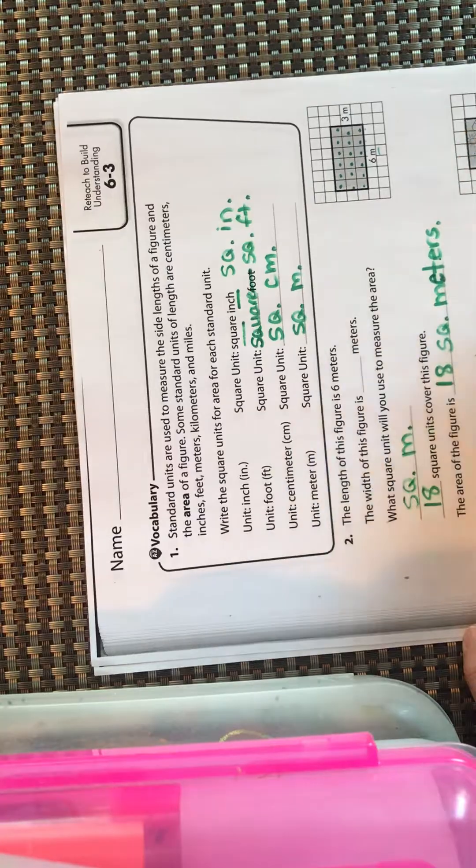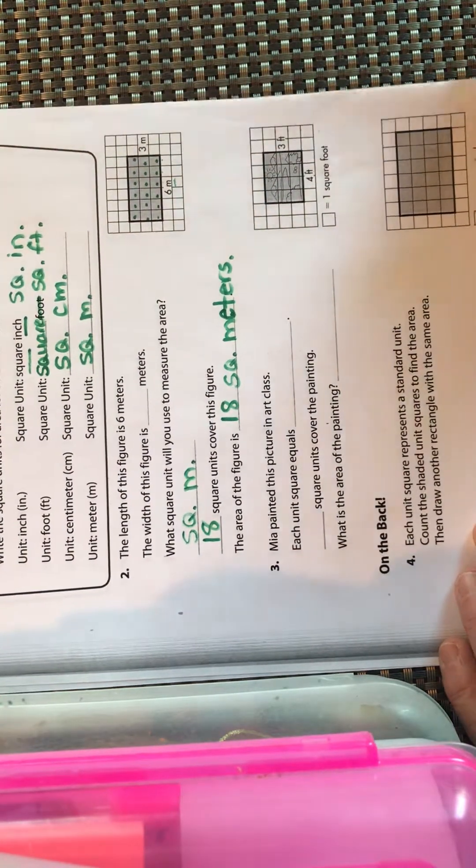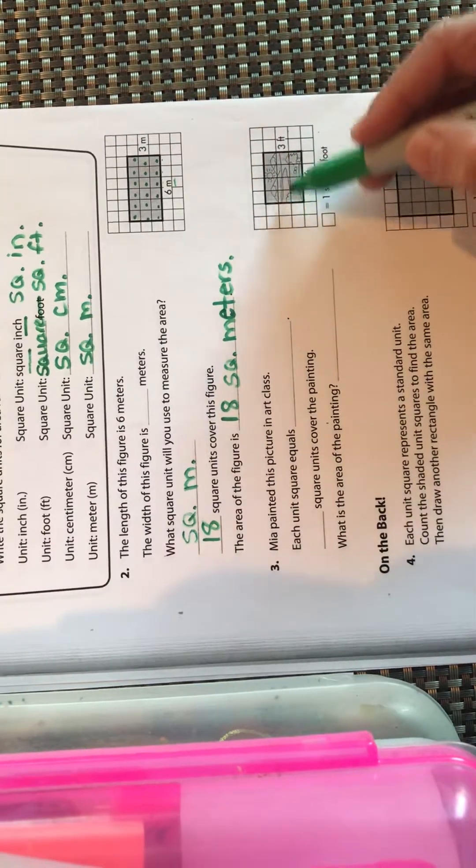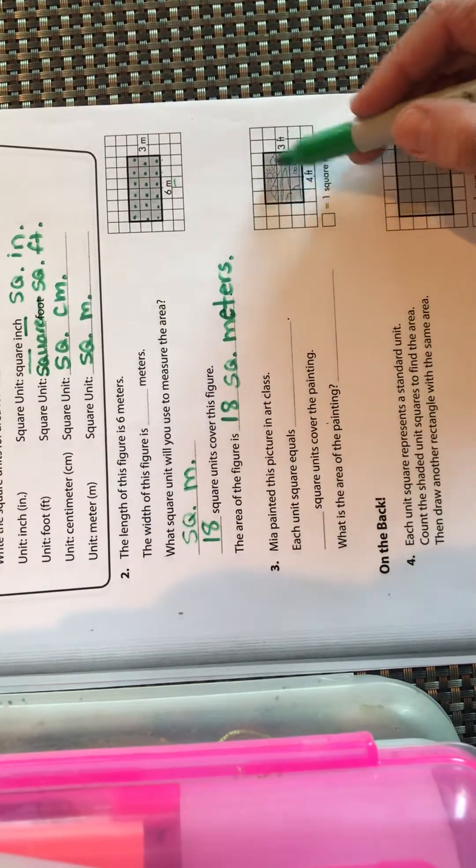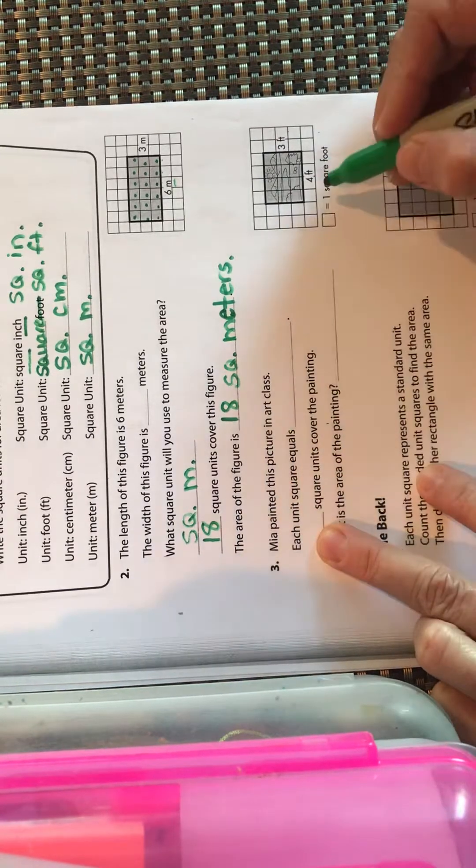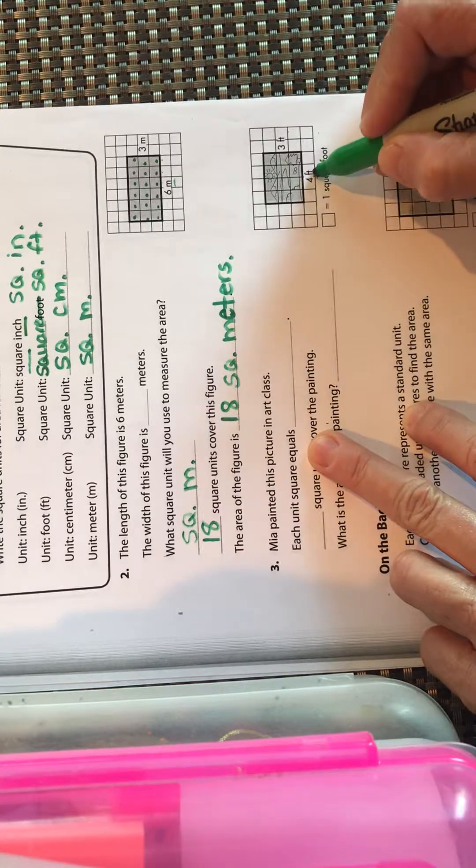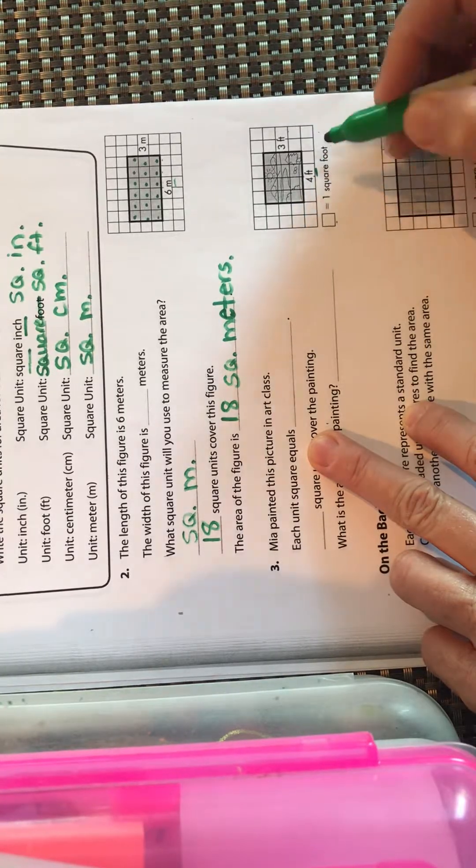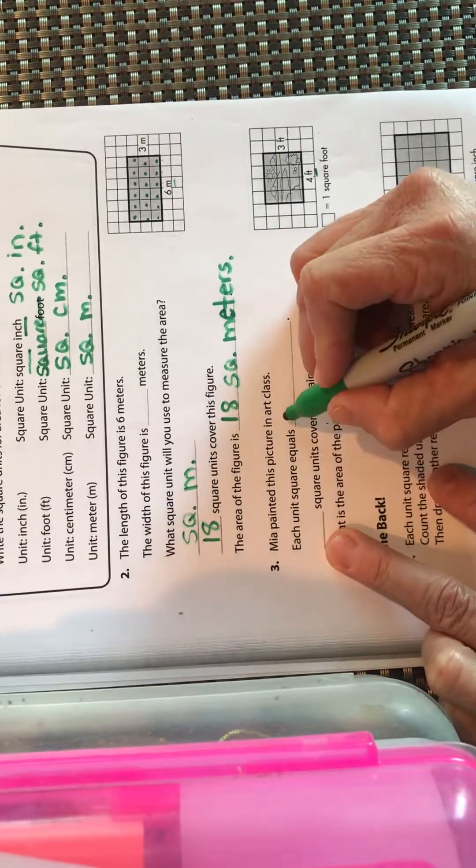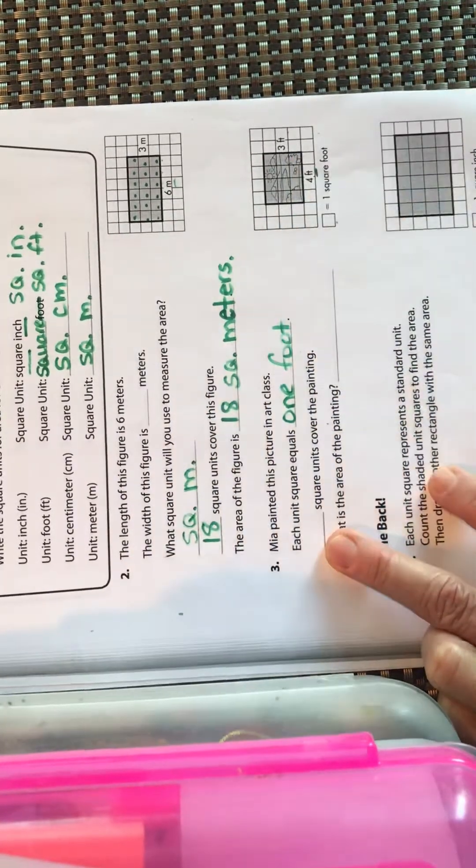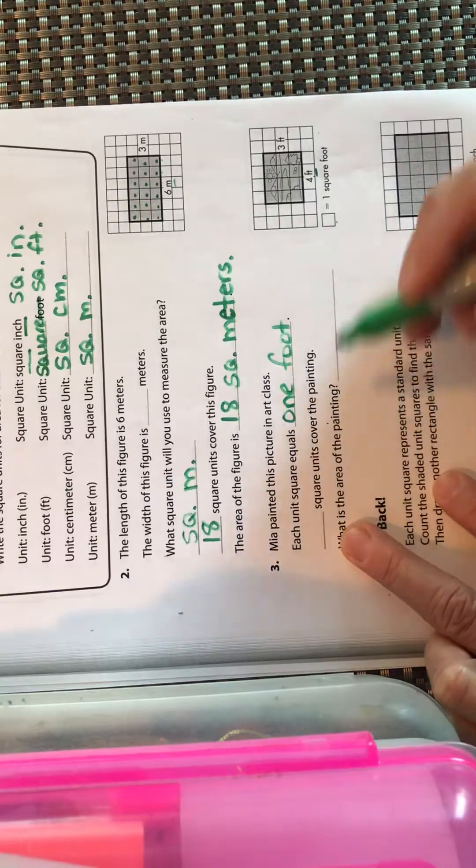It's like writing out the word inches or using IN, it doesn't matter either way, whatever is better for you. Here we have this very nice painting and they want to know what is the area of it. How many squares fill it up? Each square unit equals one foot, so how many square units cover the painting? Count them up. Pause the video, I want you to count up how many squares. How many squares are in there?